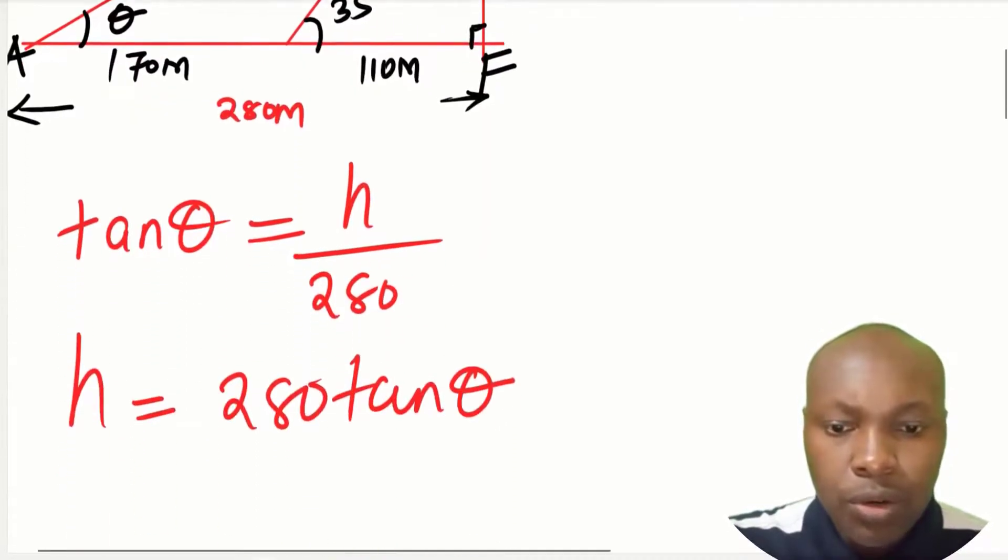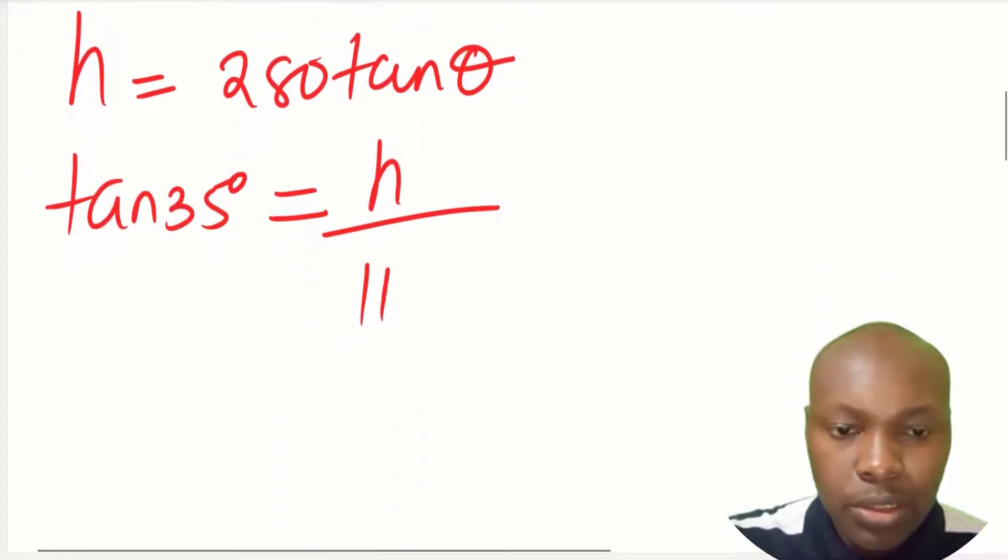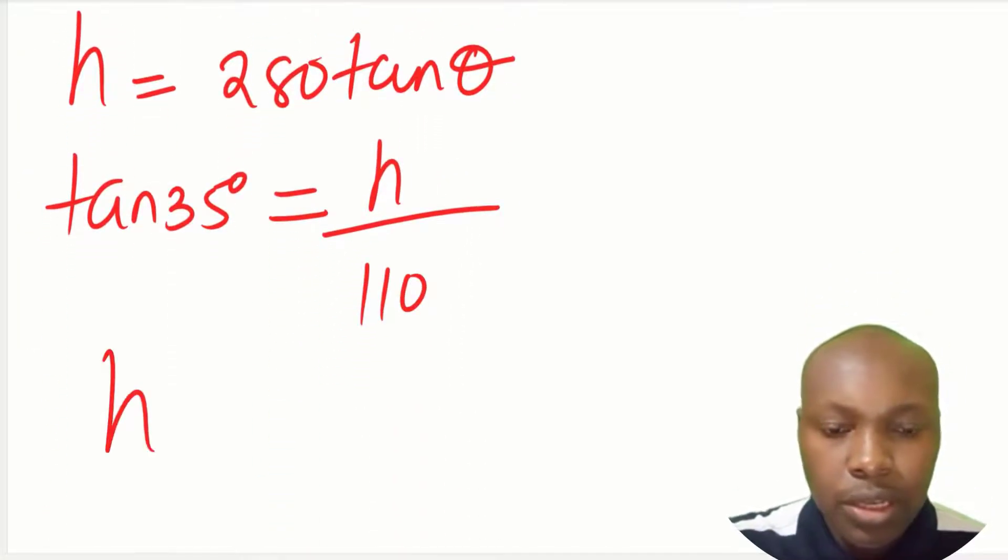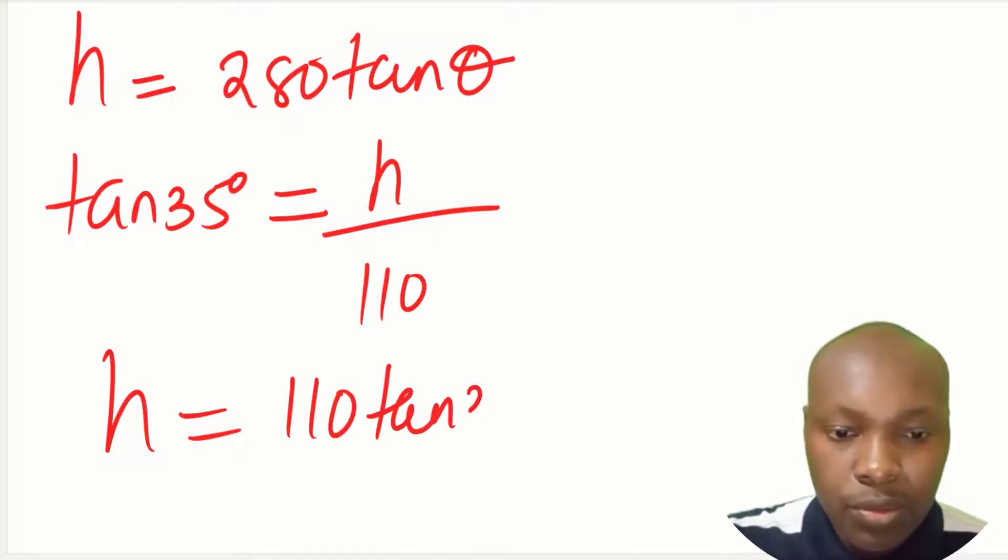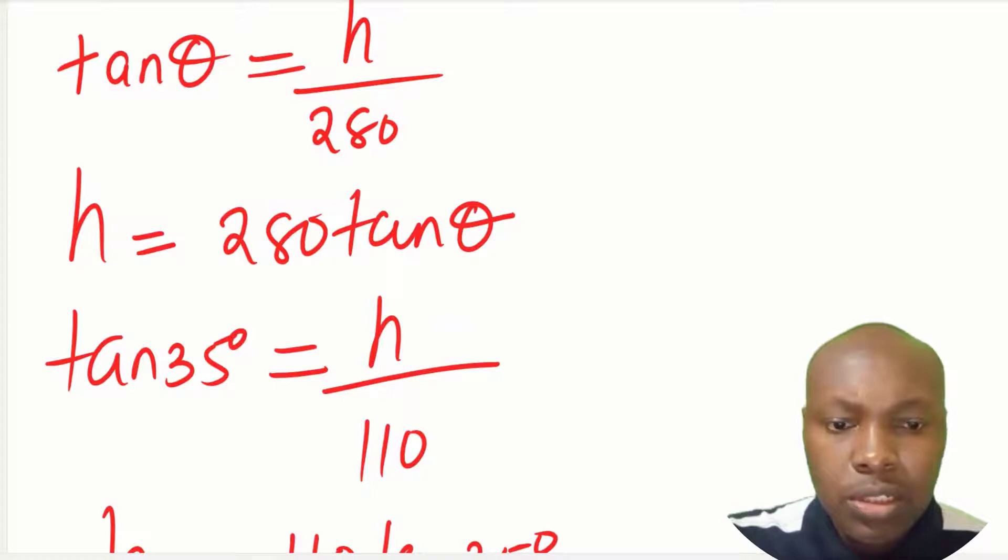Now if we consider the other triangle which has the angle of 35 degrees, you have tan of 35 is equals to the same height, but now the adjacent side will be 110. So again making h the subject of the formula, you get 110 tan of 35. So now you notice that you have two expressions for the common height.